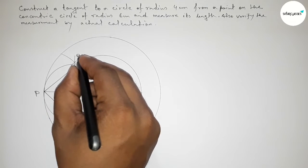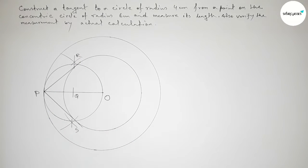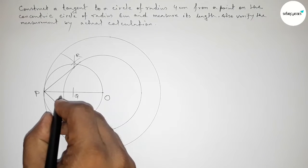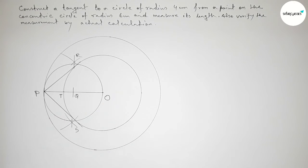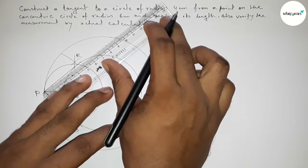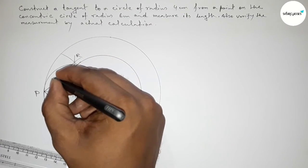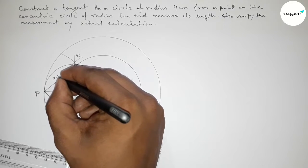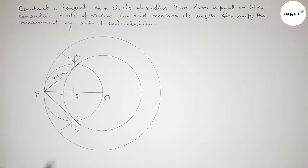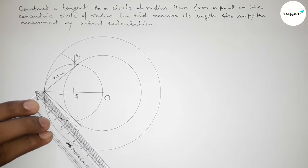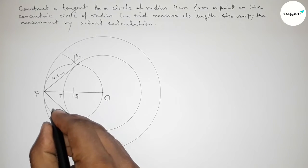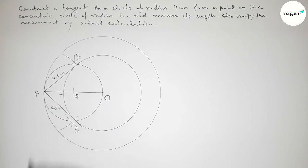These are the two tangents from point P to the circle of radius 4 centimeters. We label the tangent points T and R. Measuring the distance PR, it is approximately 4.5 centimeters. Similarly, measuring PS, it is also approximately 4.5 centimeters.